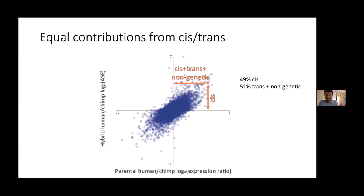The first thing we wanted to do was decompose the cis and trans contributions to gene expression divergence between human and chimp. We plot the human-over-chimp expression ratio from parental lines against the human-chimp ratio within the hybrid — the ASE, which reflects only the cis contribution — while the parental difference reflects all possible contributors including cis, trans, and non-genetic influences. We see that about half of the variation between species is explained in cis, and the other half is the trans-plus-non-genetic component.